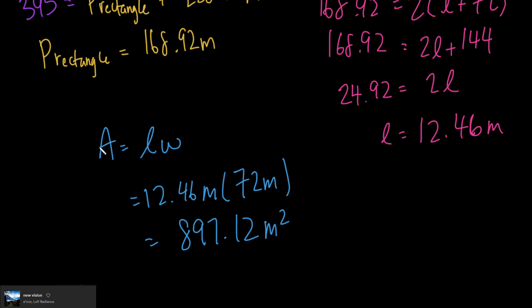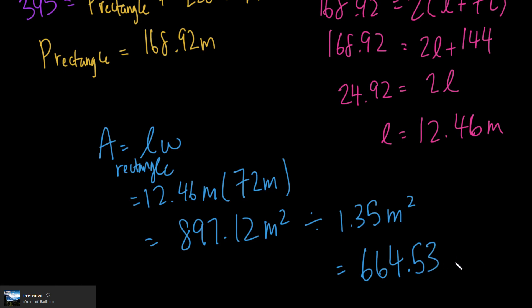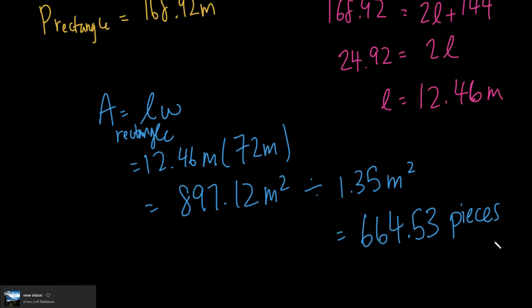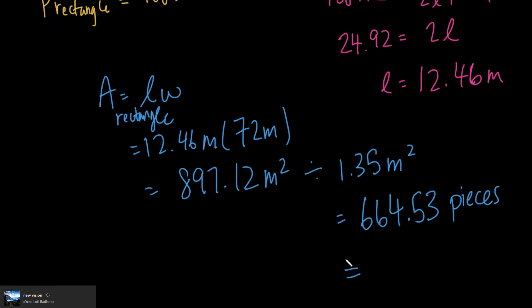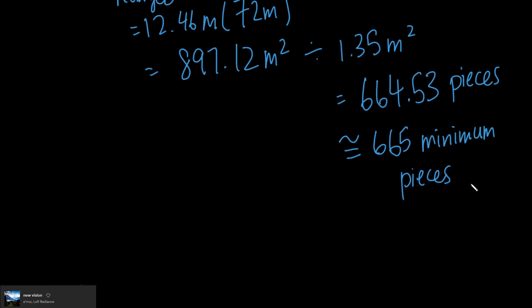We need to figure out the minimum number of pieces of grass to cover the rectangular part. We divide the area by 1.35 meters squared per piece: 897.12 ÷ 1.35 = 664.53 pieces. Since there's no such thing as a partial piece, we round up. Therefore, the minimum number of pieces needed to cover the rectangle is 665.